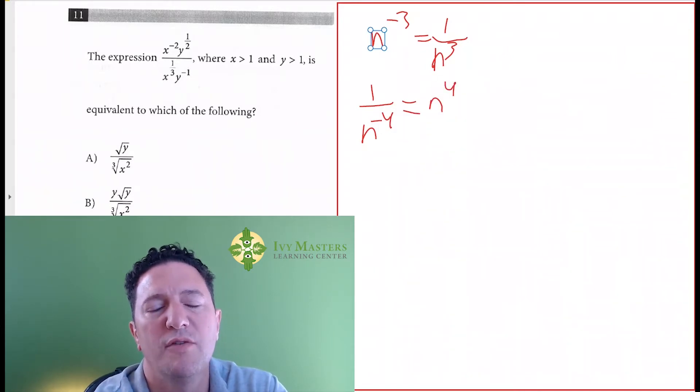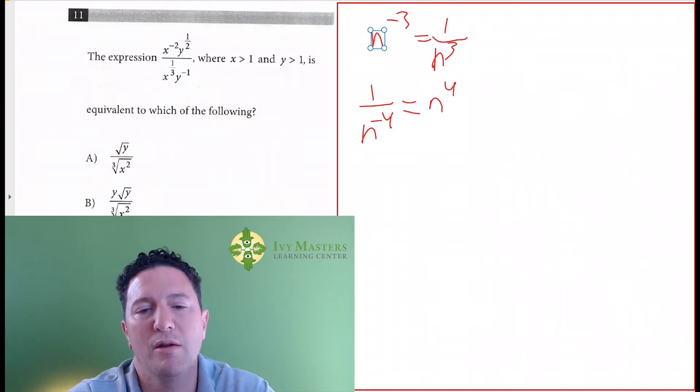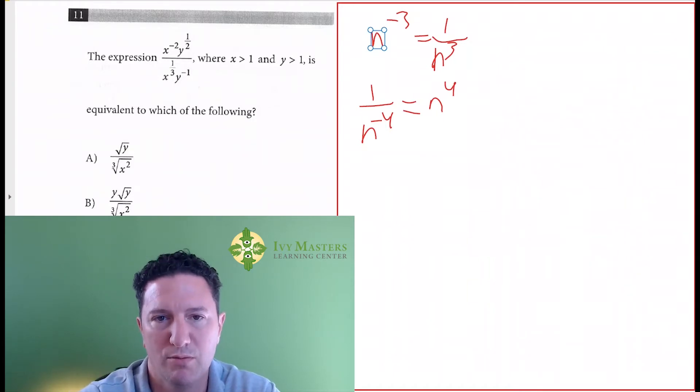In other words, if the exponent's negative in the top, it gets thrown to the bottom and becomes positive. If the exponent is negative in the bottom, it gets thrown to the top and becomes positive.